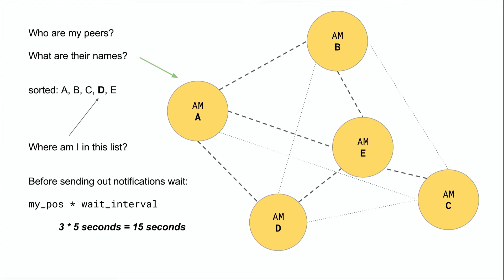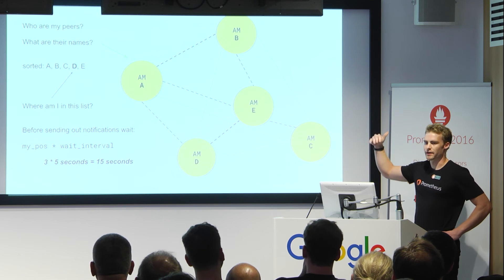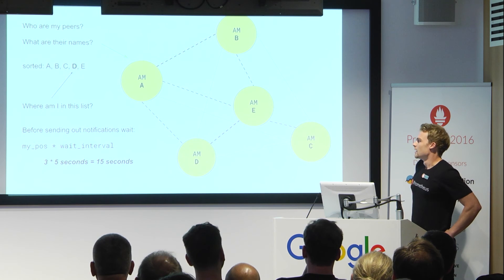So what we have to do is at every point in time, even if you can't talk to certain other Alert Managers directly, we sort of have this state or a state of the entire network of Alert Managers, and thereby we can say, okay, this is me and this is a list of my peers. And if I sort this list by name or IP or whatever, where am I?